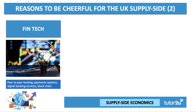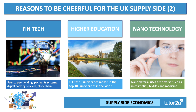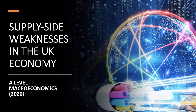Fintech — from peer-to-peer lending, new payment systems, blockchain technologies, and emerging challenger banks — is a sector in the UK that's doing pretty well. We still have nearly 20 universities ranked in the top 100 universities in the world, although it'll be interesting to see the impact of the COVID-19 pandemic and the economic crisis on the financing of UK universities. And finally, nanotechnology, whose uses include cosmetics, textiles, and medicine — the UK is developing some world-leading capability in nanotechnology. So there we go: some reasons to be cheerful. There are some significant supply-side weaknesses in the UK which we've been through, and it's important to balance them out as best you can. Thank you very much.